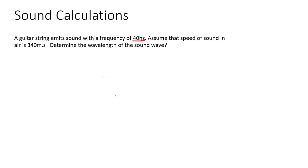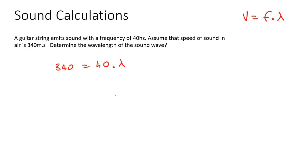Assume that the speed of sound in air is 340 meters per second. Determine the wavelength. So we use the formula V equals F multiplied by lambda. The speed is 340, frequency is 40, and the wavelength is what we're trying to find. So 340 divided by 40 gives you 8.5 meters.